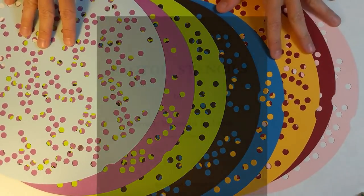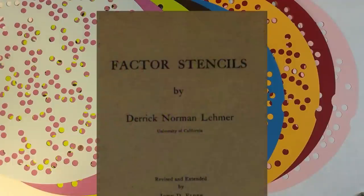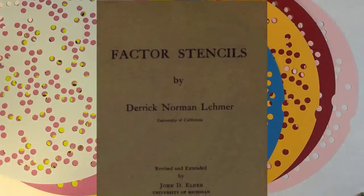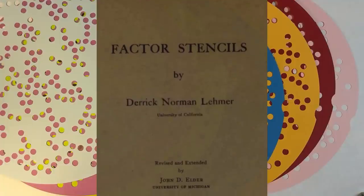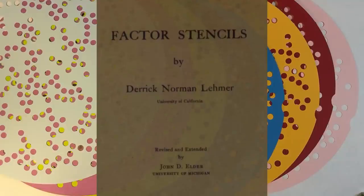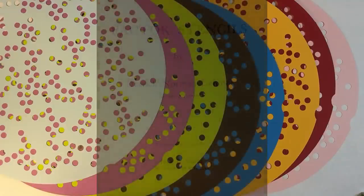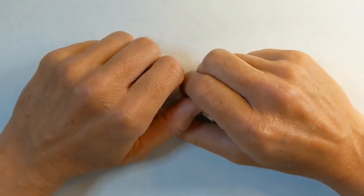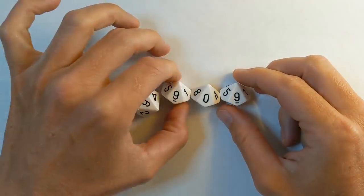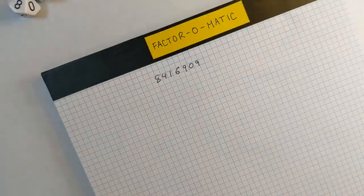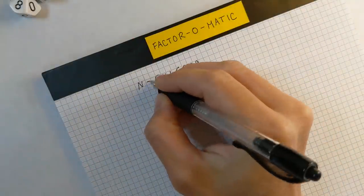Lehmer's stencils, which were distributed to libraries around the United States, had thousands of holes on each sheet. But even with my smaller version here, I can factor any number up to about 10 million by hand, and even bigger numbers in many cases. Factoring numbers in the millions was actually the state of the art before Lehmer invented his stencils. Let's roll a random number having seven digits. We'll just call this number n.